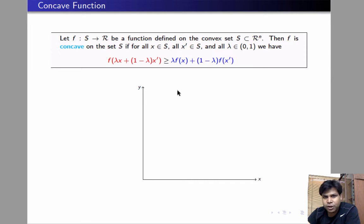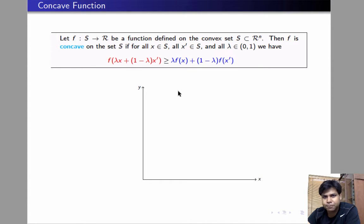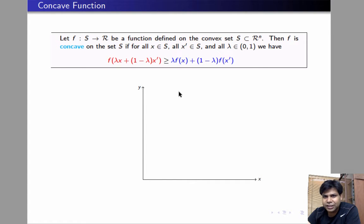We say that f is concave if for every x, x prime in S and for every lambda between 0 and 1, f of lambda x plus 1 minus lambda x prime is greater than or equal to lambda f(x) plus 1 minus lambda f(x prime). Notice that this inequality must hold for every x, x prime and lambda for us to say that the function f is concave. Let us see what this condition means graphically.